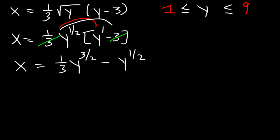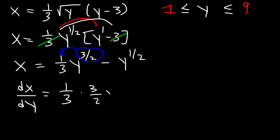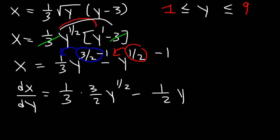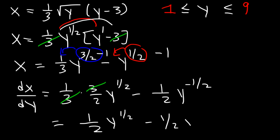Now we want to find the first derivative: dx dy. Starting with the first term, take the exponent 3 over 2 and move it to the front: 1 over 3 times 3 over 2. Subtract 3 over 2 by 1 — 1.5 minus 1 is 1 half. Now using the power rule on negative y to the 1 half: move this to the front, giving minus 1 half y, and subtract the exponent by 1 to get negative 1 half. Cancel the 3, so dx over dy is 1 half y to the 1 half minus 1 half y to the negative 1 half.